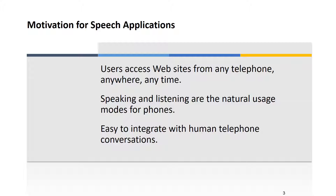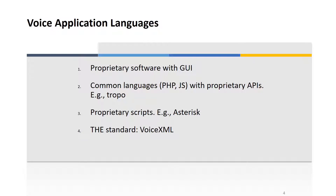Speaking and listening are natural usage modes for phones — the usual way that people use phones anyway. So having an application that is very close to how people use phones is one barrier less. You can also combine automated applications with actual people on the phone. For example, when you call your doctor, you get a voice menu with a few choices, and if you choose 'connect me to a person,' the application forwards your call to an actual person who can help you.